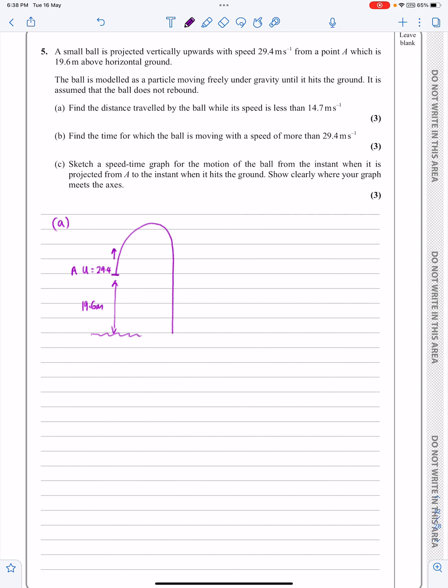But it's the question that then catches me out. It says, find the distance travelled by the ball while its speed is less than 14.7 metres per second. So, alright, okay. Well, 14.7 metres per second. We know with all of these objects that if it starts off with U equals 29.4, as it's travelling up there, it gets lower and lower and lower the speed till eventually it becomes zero at that point. Then it starts increasing down. We know from symmetry that it's going to be going at 29.4 there. We know it's going to keep accelerating all the way down until it hits the ground.